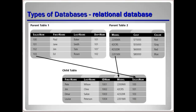In this example, the first parent table shows the salespeople within a company, and the second parent table lists the different product models sold by that company. Looking at the child table, it lists customers who have purchased various models. The child table is linked to the first parent table by the sales number, and also linked to the second parent table by the model. You can see how those relationships are drawn on this pseudo-entity relationship diagram. The important thing is that the relational database differs from the hierarchical in that a child table can have multiple parents.